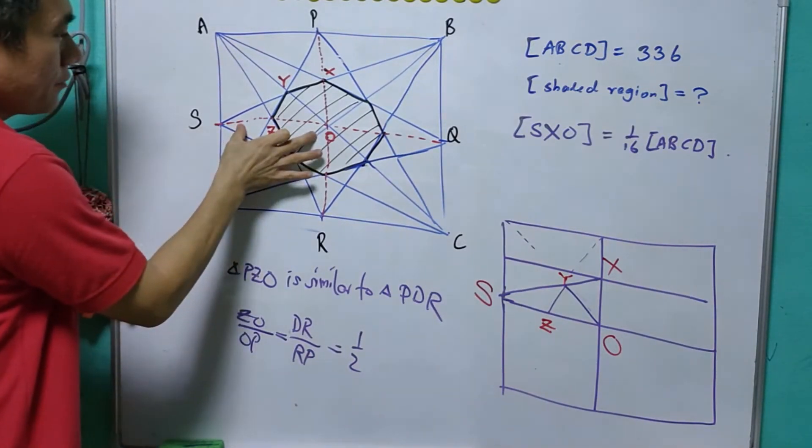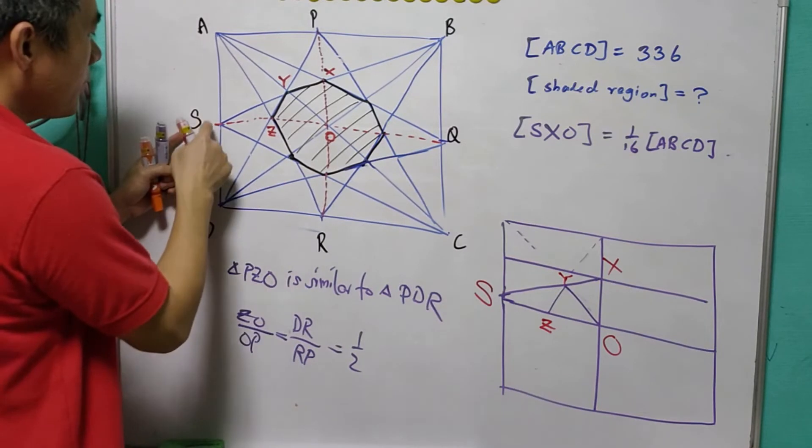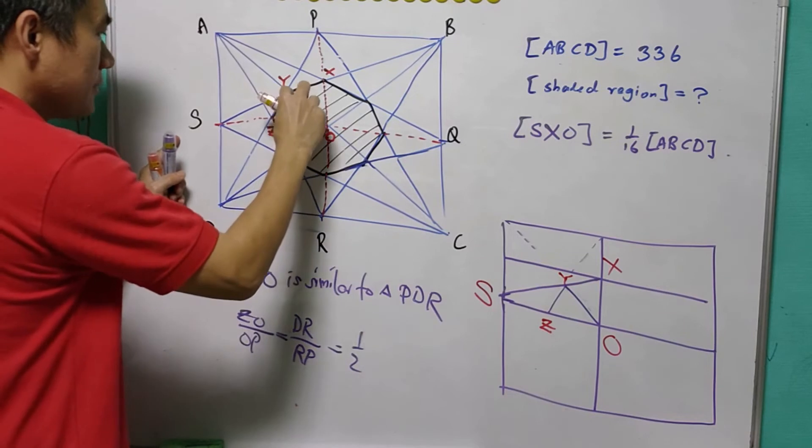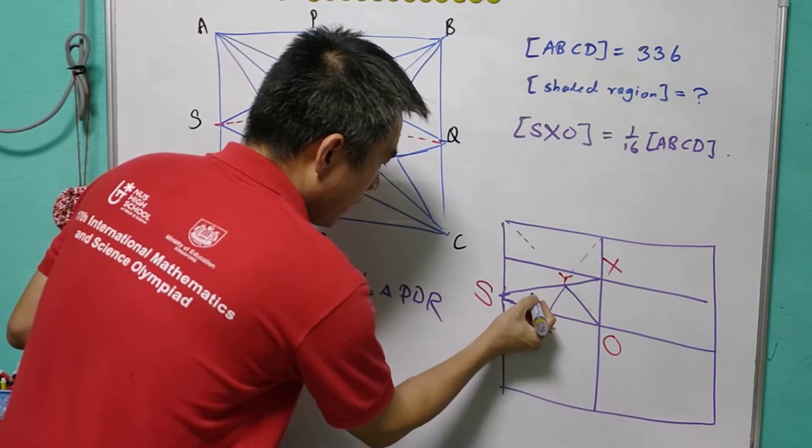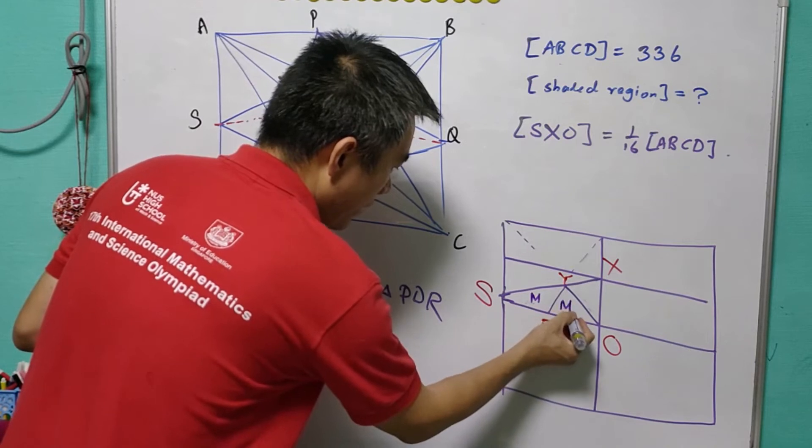If Z is a midpoint of X and O, then this will mean that the triangle XZY and OZY are of the same base and same height. If this is of area M, this will be also of area M.